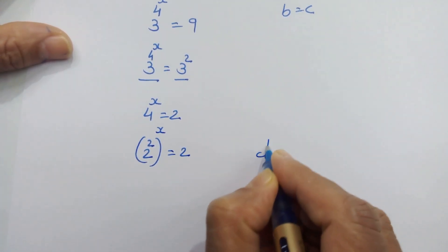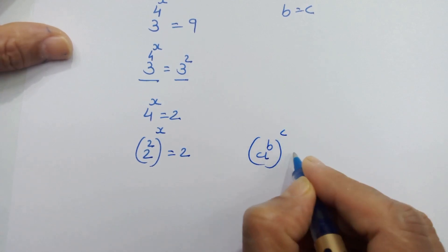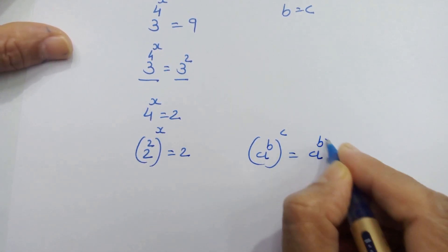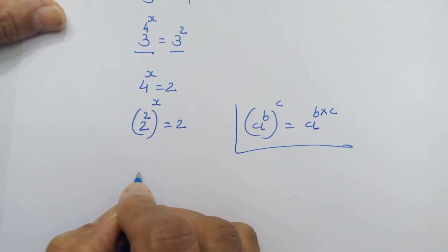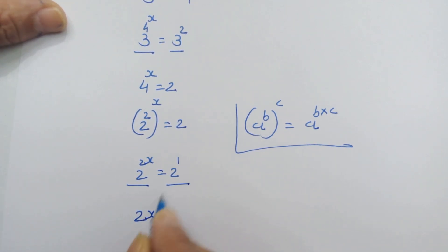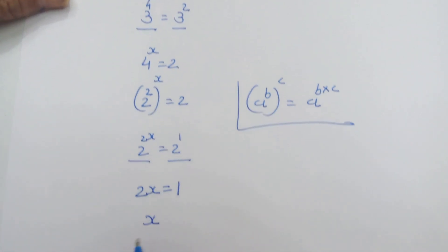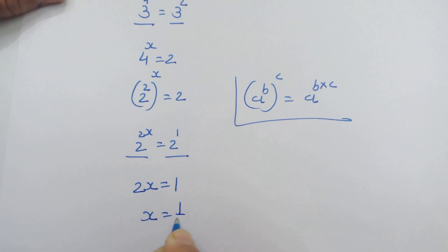If we have a raised to b, whole raised to c, we can write this as a raised to b times c. Using this rule, we can write 2 raised to 2x equals 2. This 2 has exponent 1. Again we have the same base, so we can equate the exponents. Therefore, x equals 1/2.